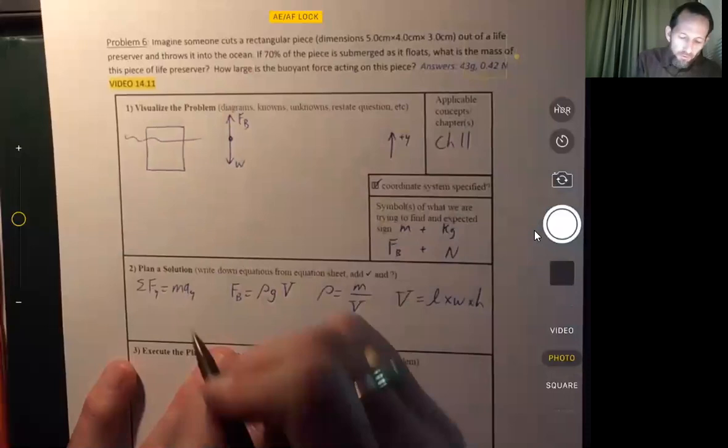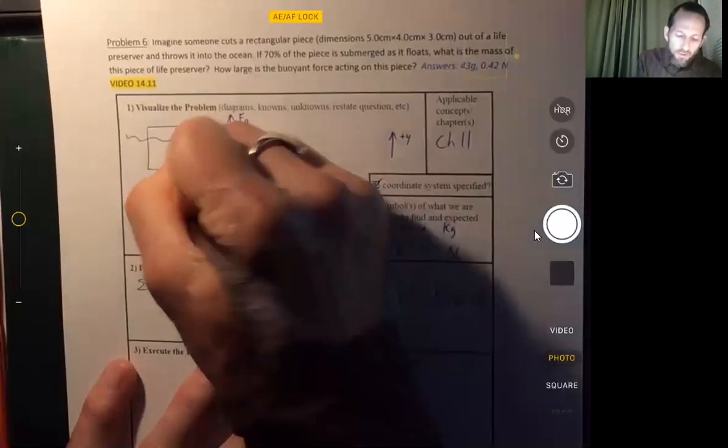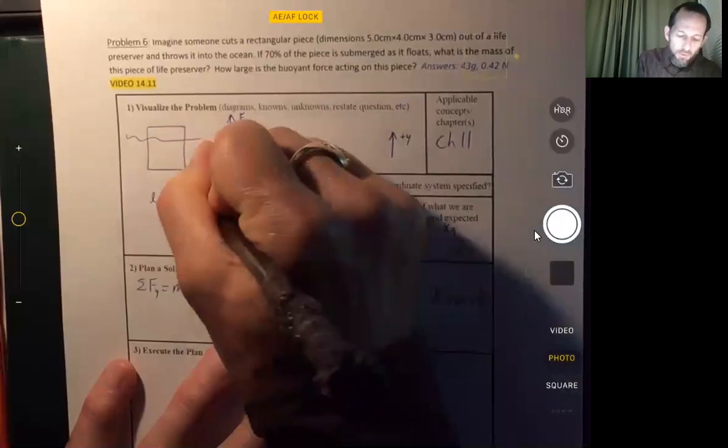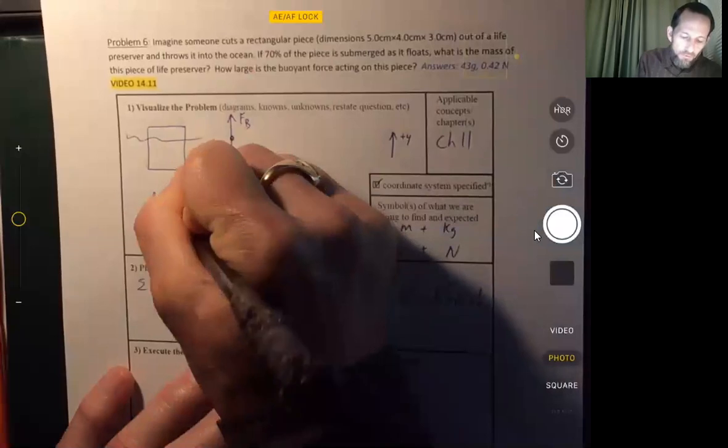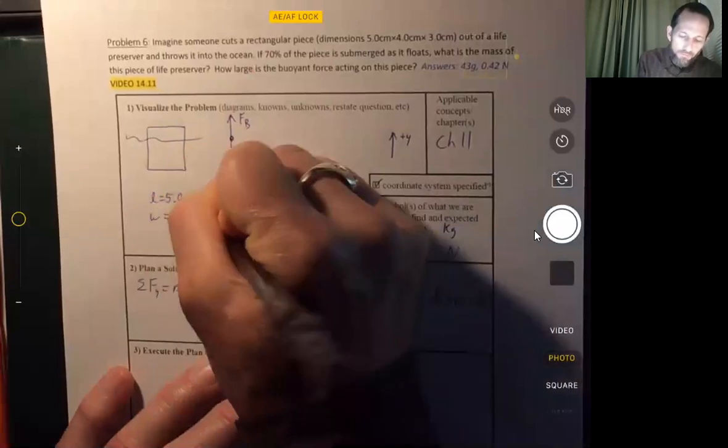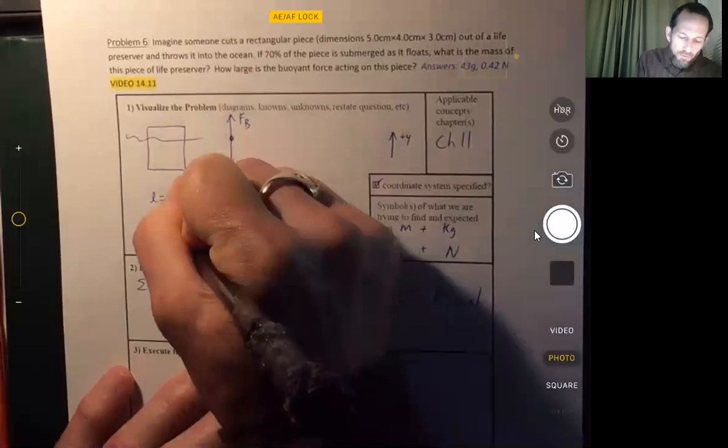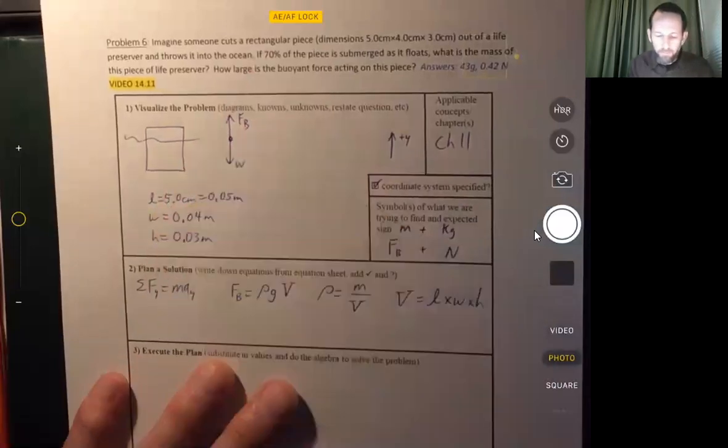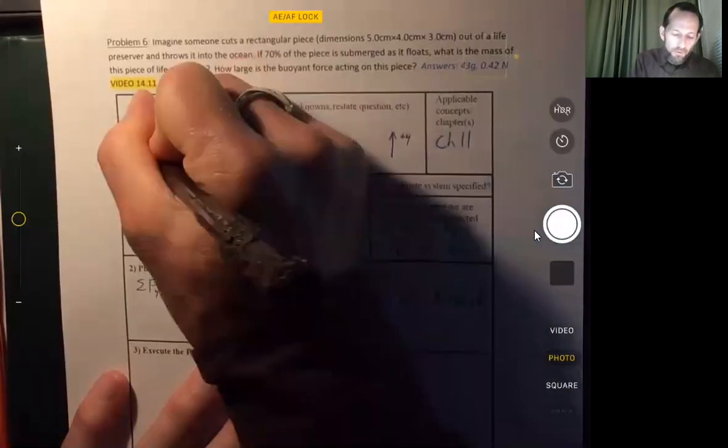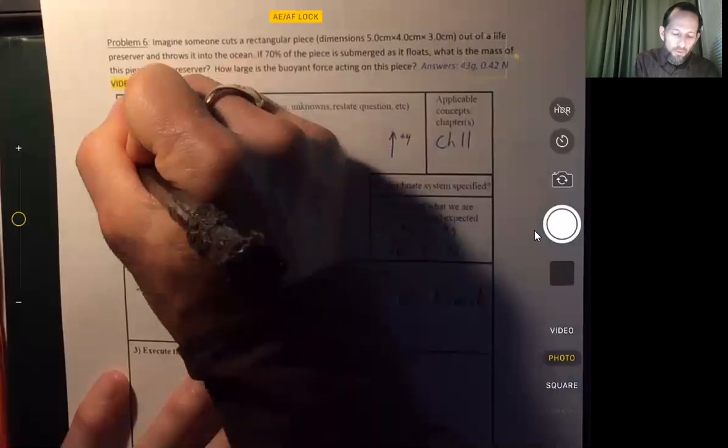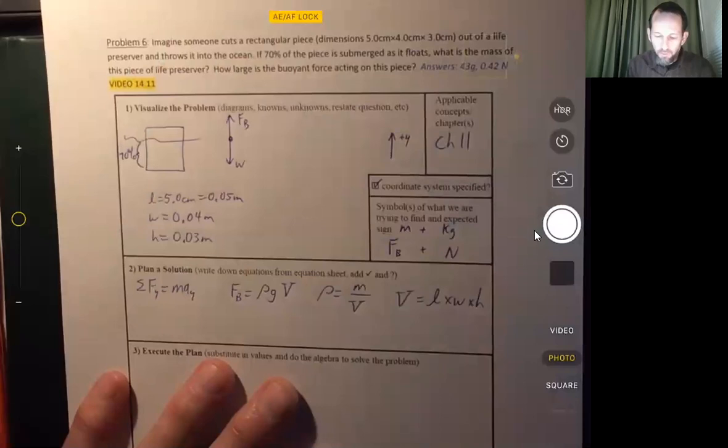What else is known? Well, the length is 5 centimeters or 0.05 meters, and the width is 4 centimeters or 0.04 meters, and the height is 0.03 meters. And we know this part that's under the water is 70% of the total. That's about all we know.